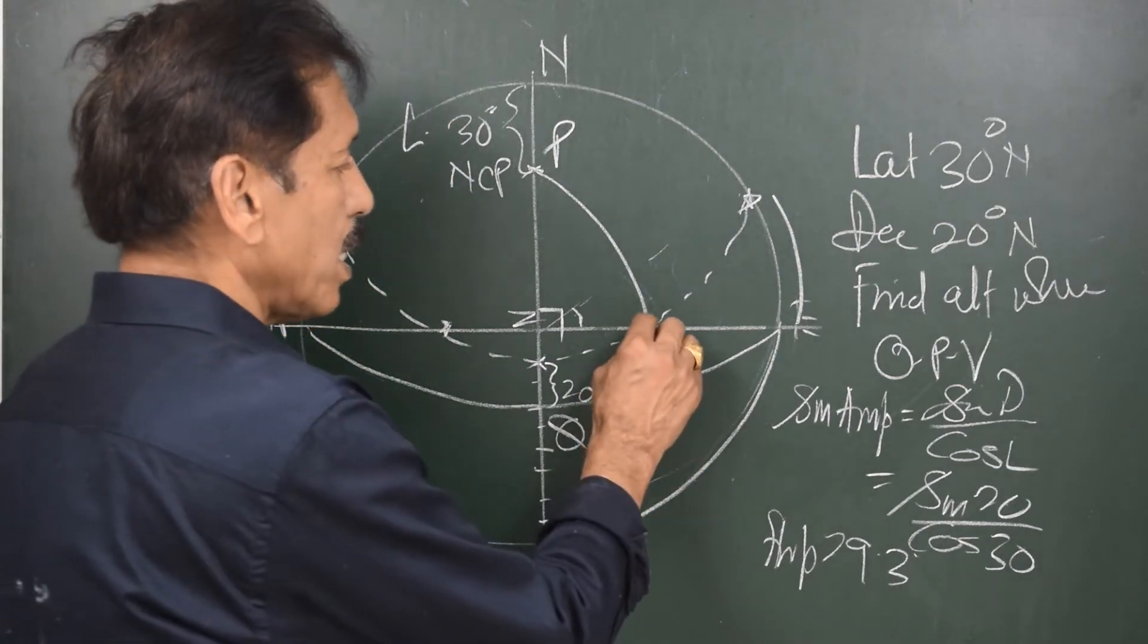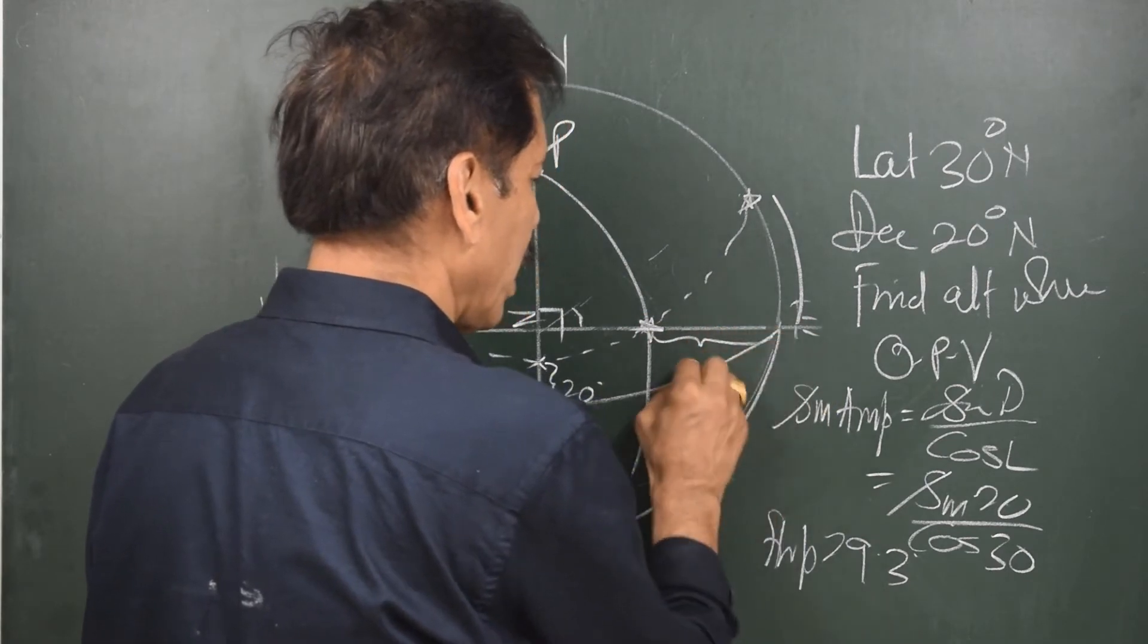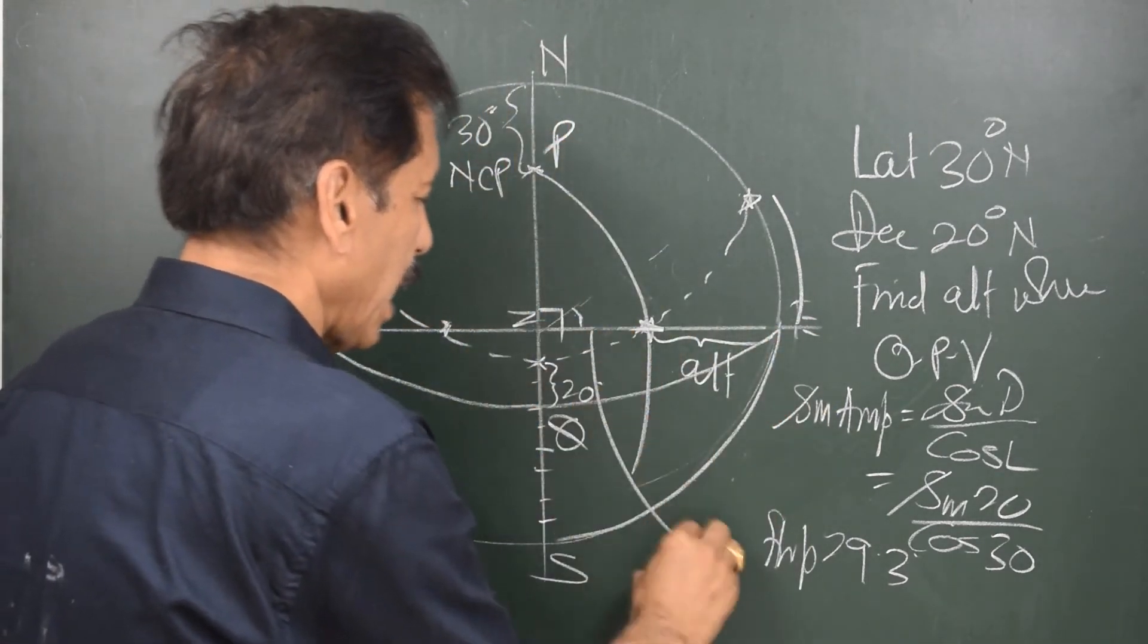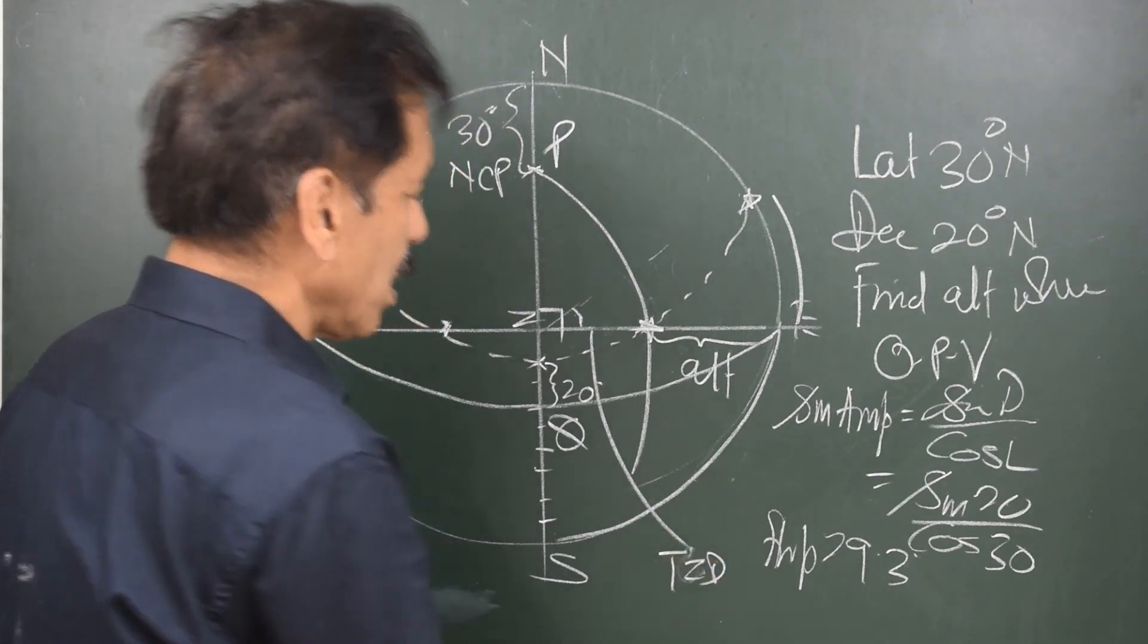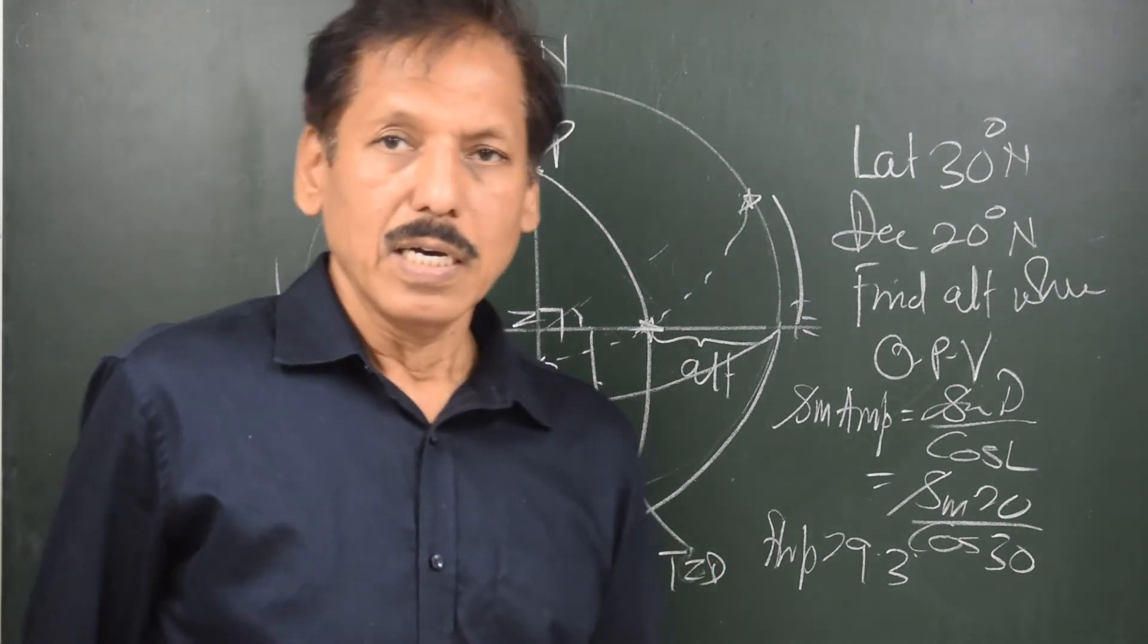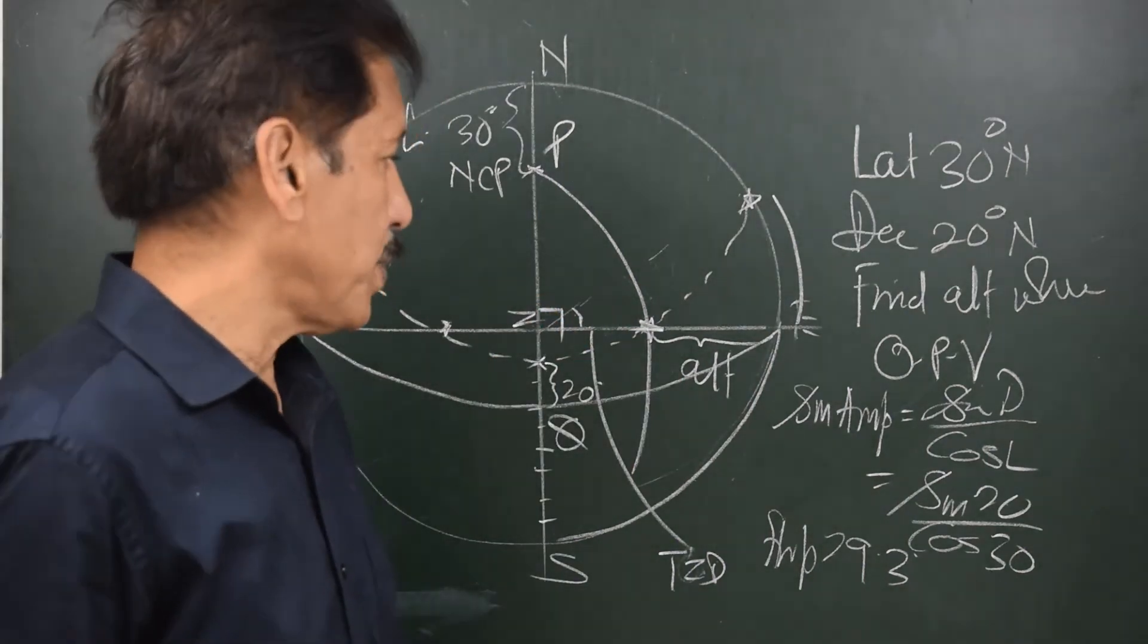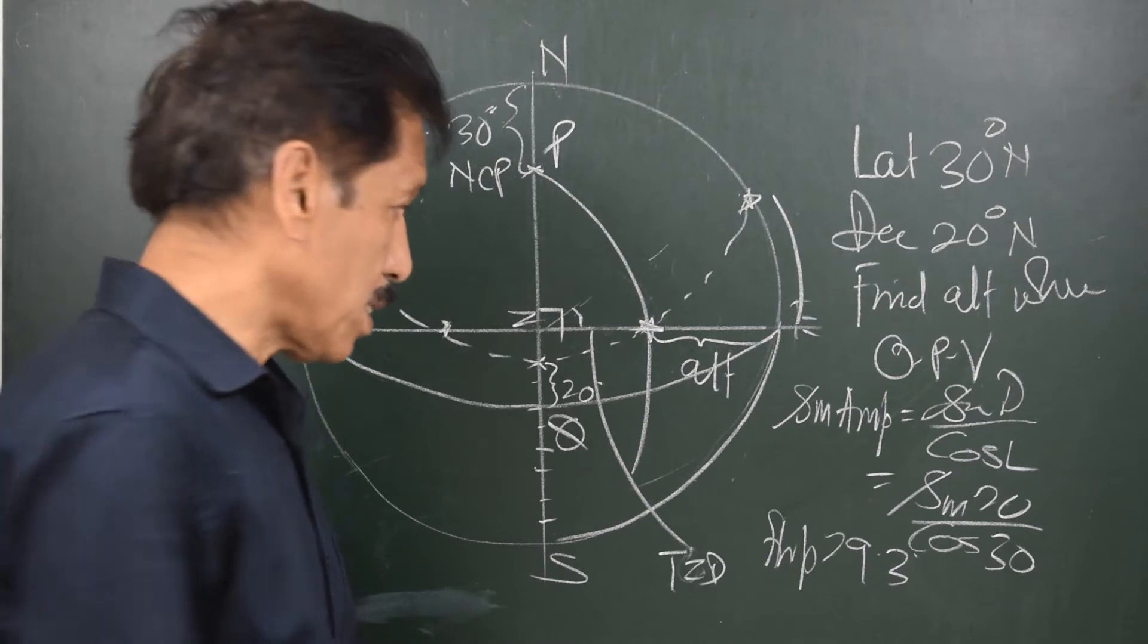Altitude means the distance from the horizon. This is what is required. But in this Pzx triangle, if we can find out this as true zenith distance, if we can find out in this triangle. Or in this triangle, if we can find out zx, 90 minus zx will be the answer. Now, how to find out zx in this triangle?